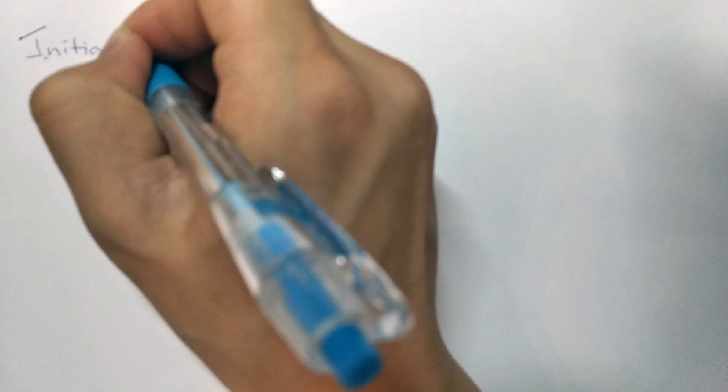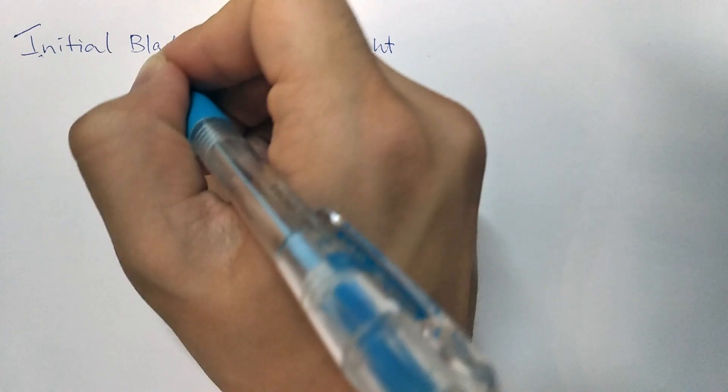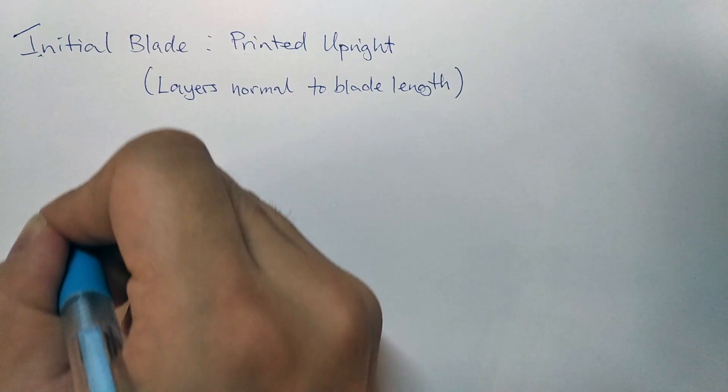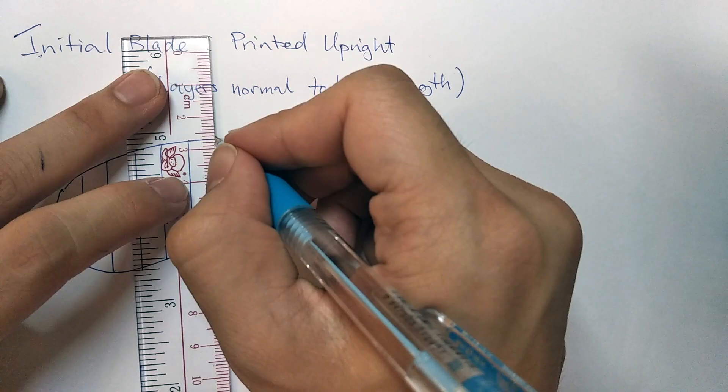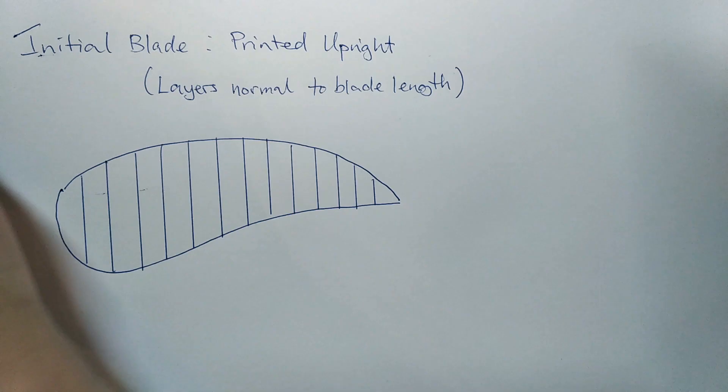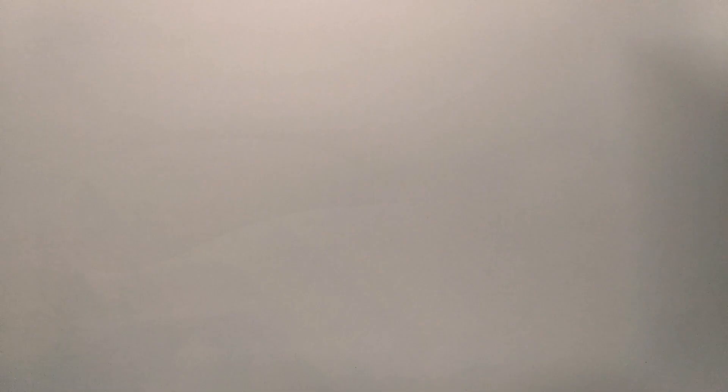Initially, our turbine was printed upright, giving an excellent finish. However, this had a large impact on the structural integrity of the design that we had not accounted for in the design process. This led to the failure of our first model, which is discussed later in the video.